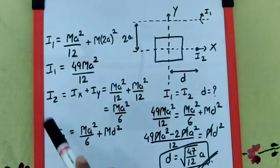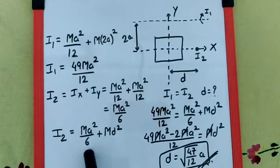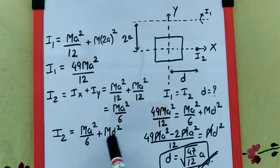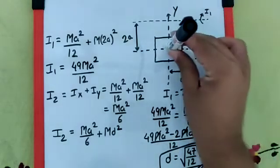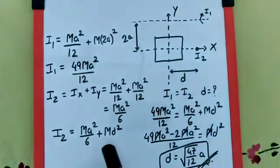So I2 is IZ plus MH square. So IZ is MA square by 6, plus MH square where H is D, the distance between the two parallel axes. So MD square.